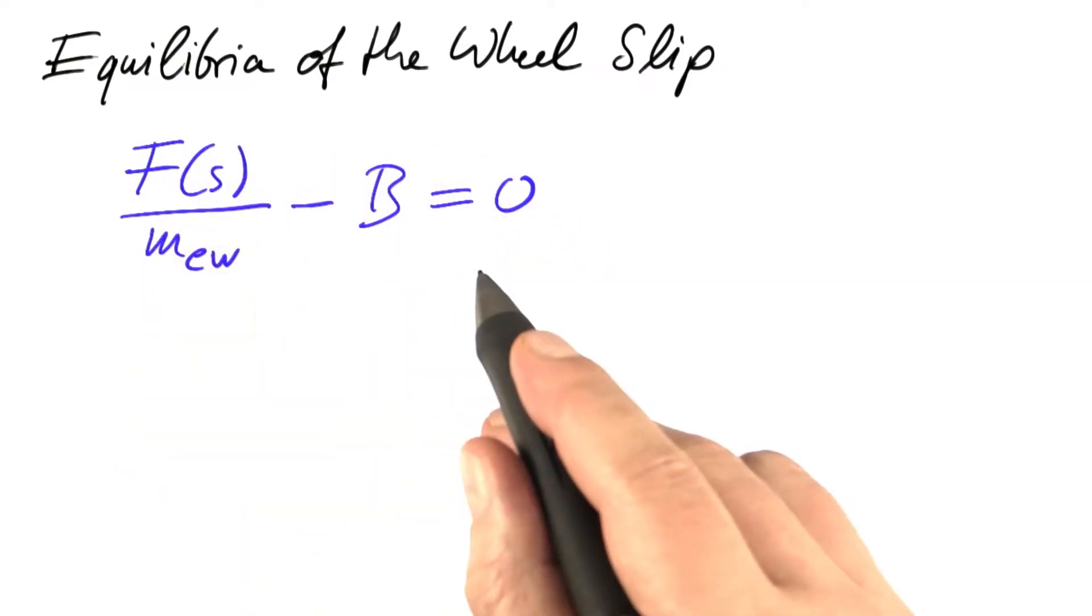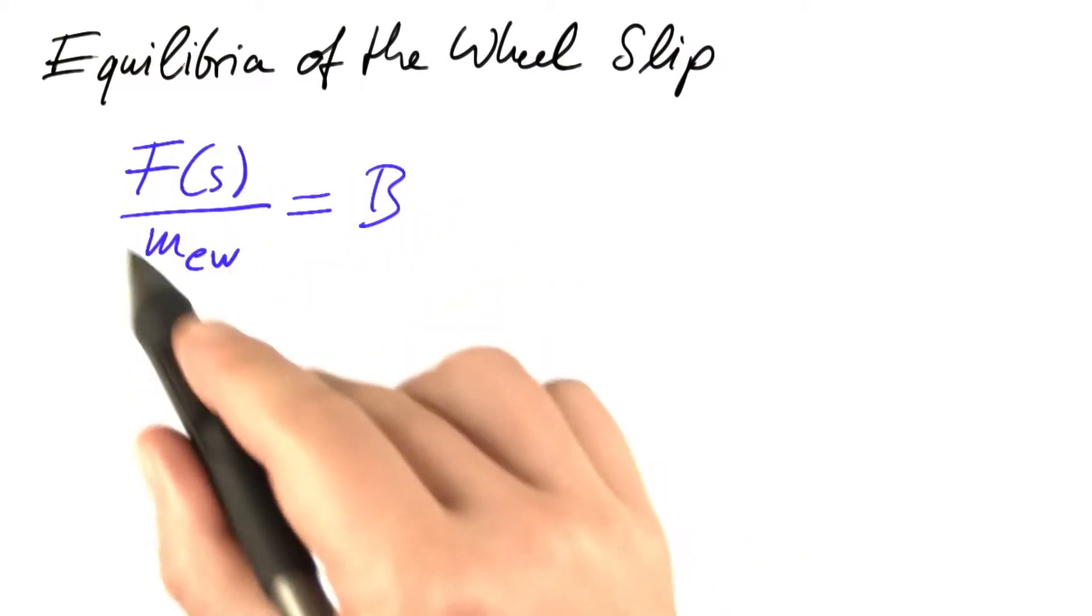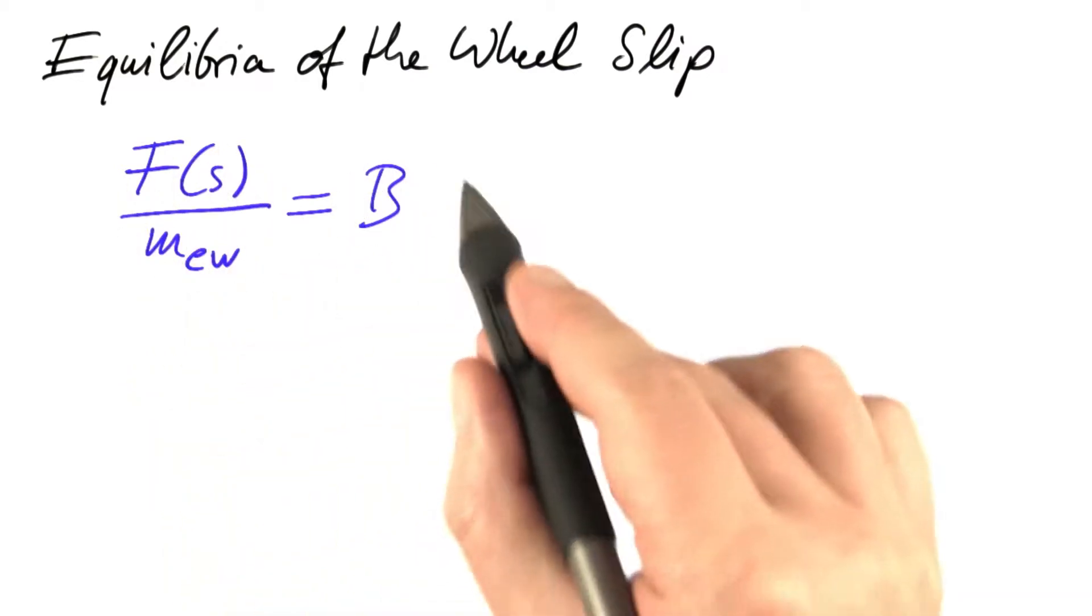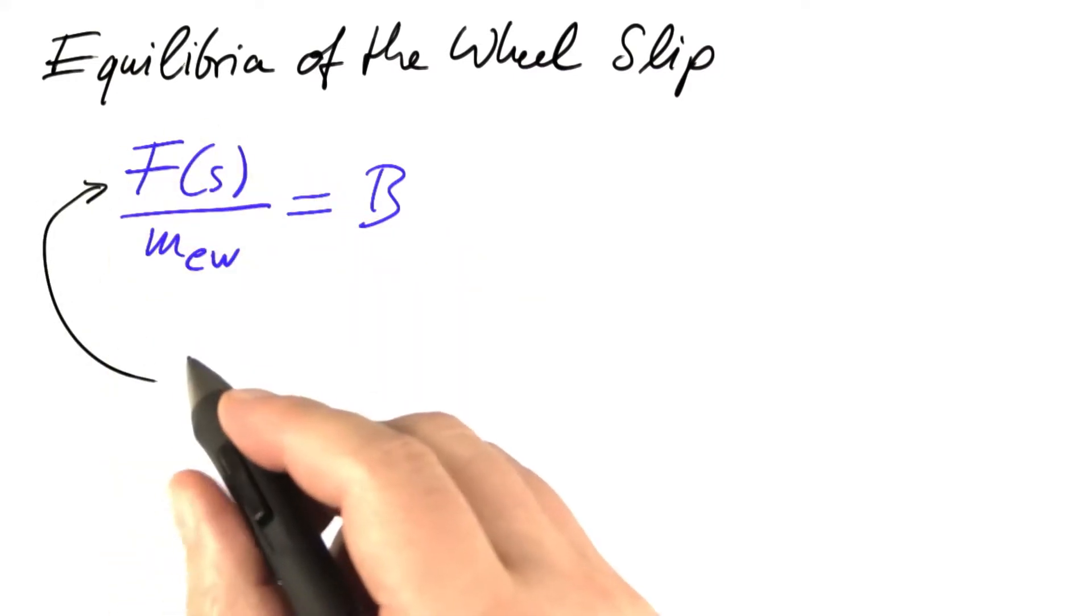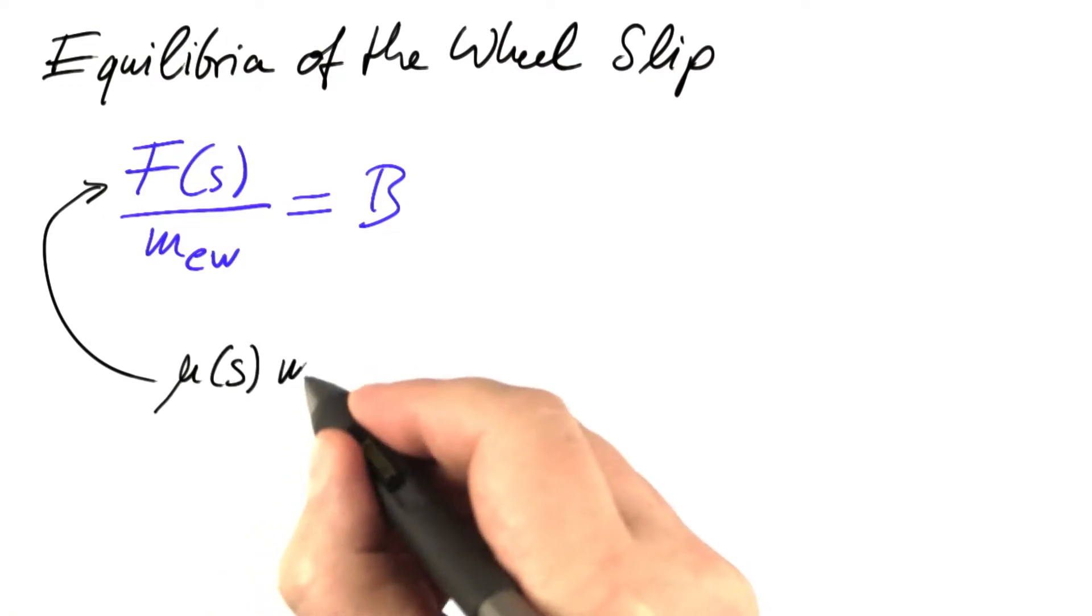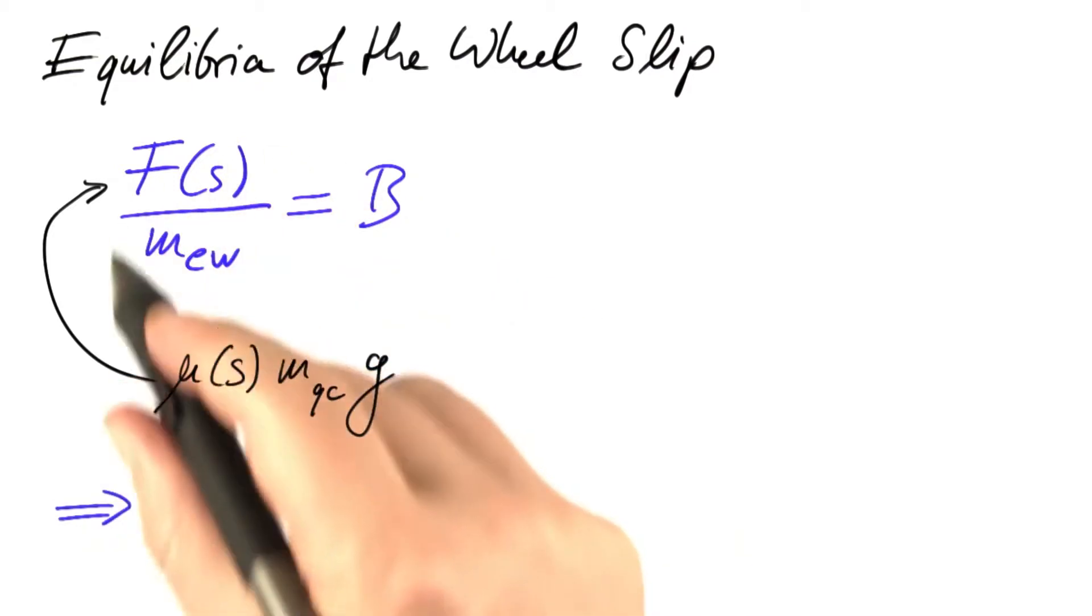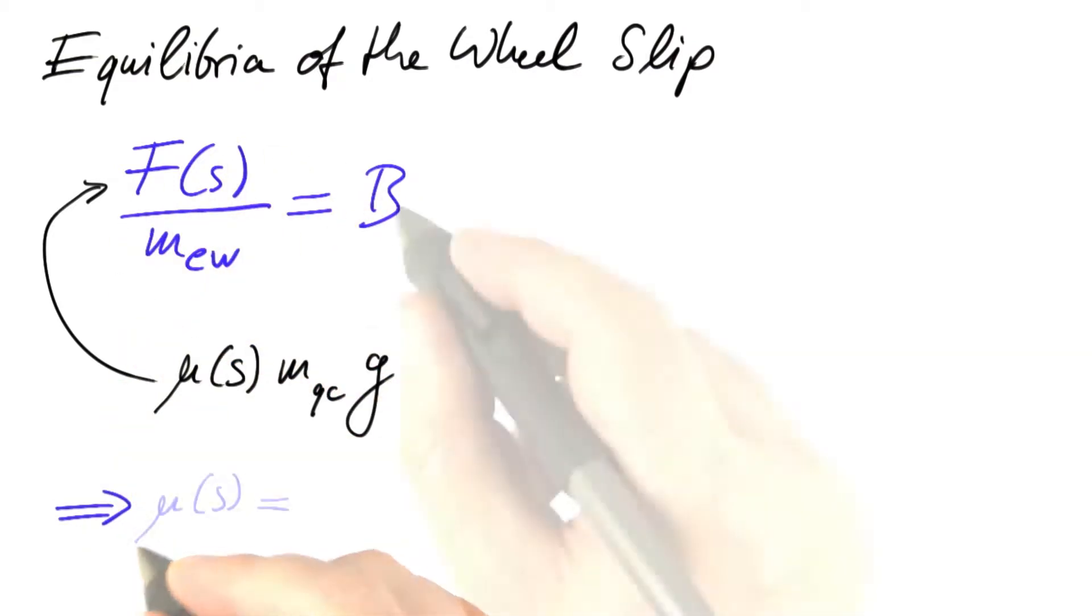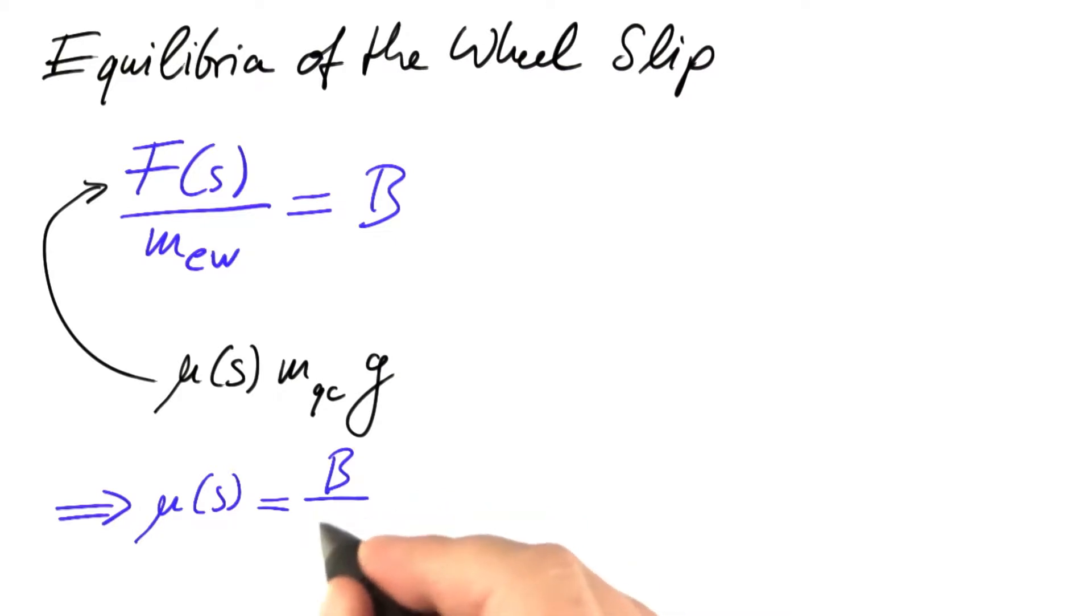Let's take this equation and put it in this form, so it's easier to see what has to be balanced. The force divided by the mass has to balance the deceleration by the brake. The force can be expressed with the help of the friction coefficient, the mass of one quarter of the car, and the gravitational acceleration. So this equation boils down to the following: the coefficient of friction has to equal the deceleration of the wheel over the gravitational acceleration times the ratio of the masses.